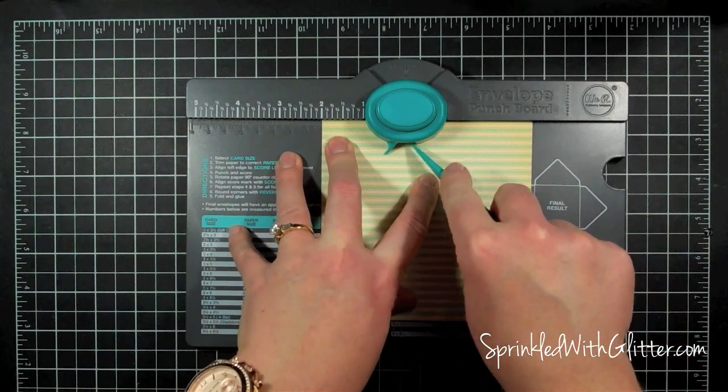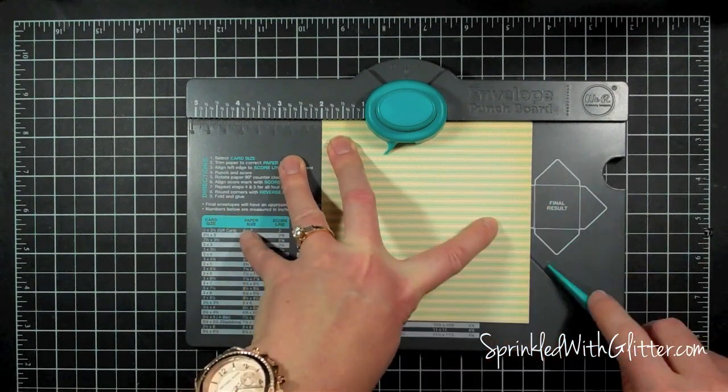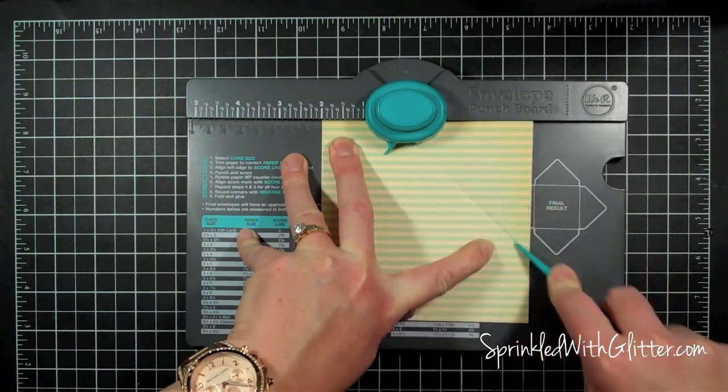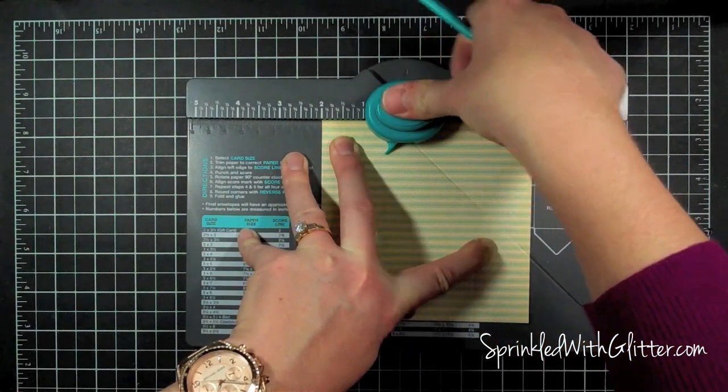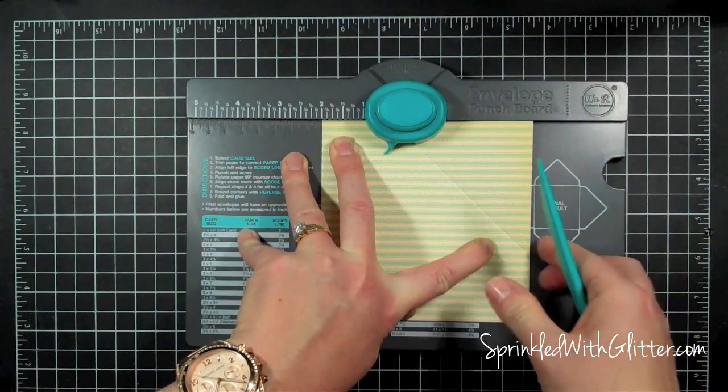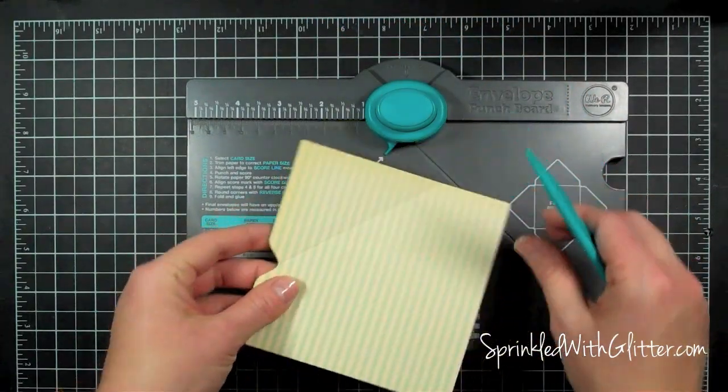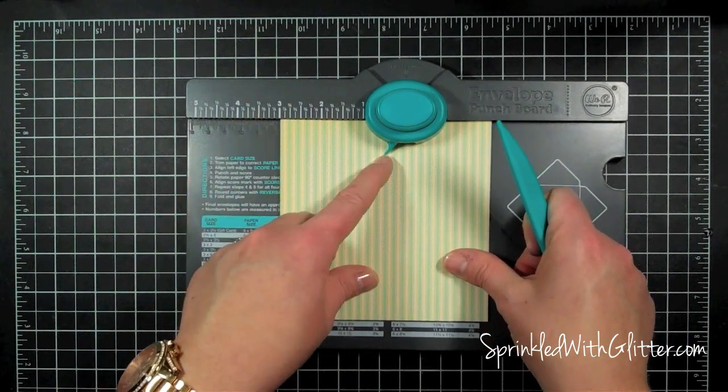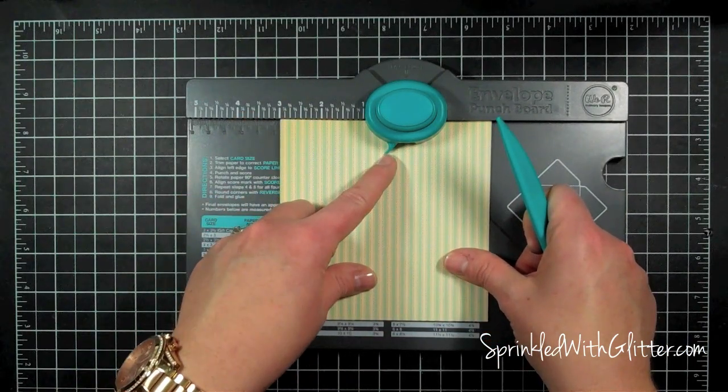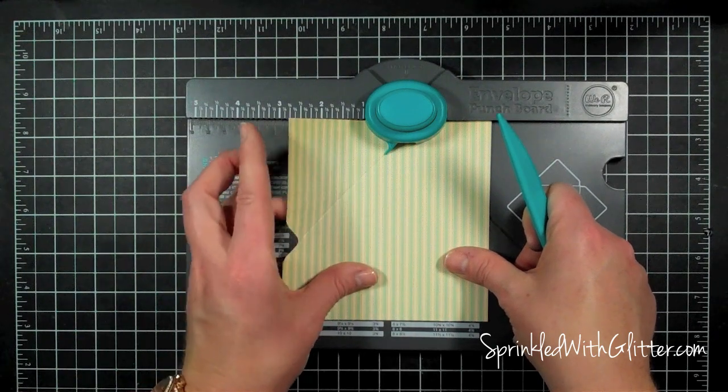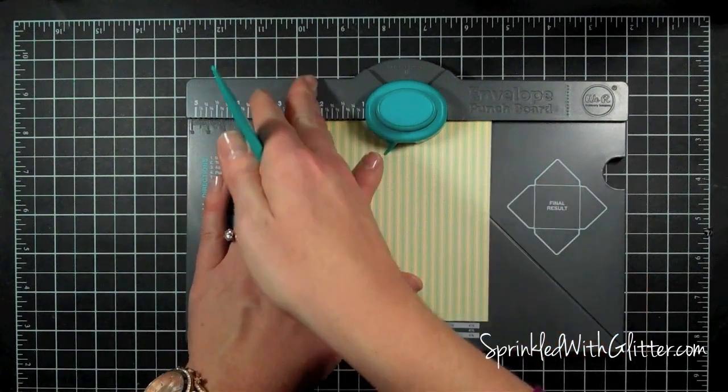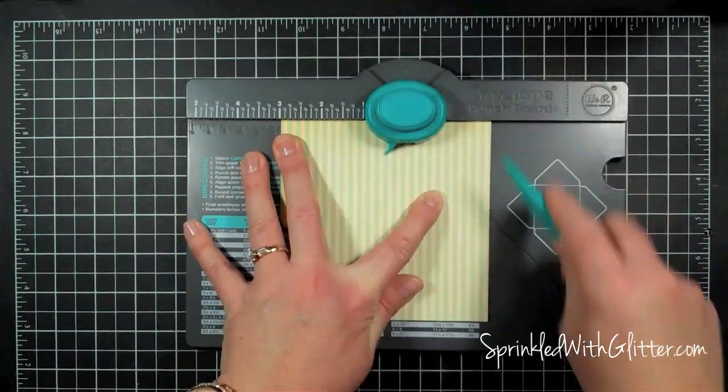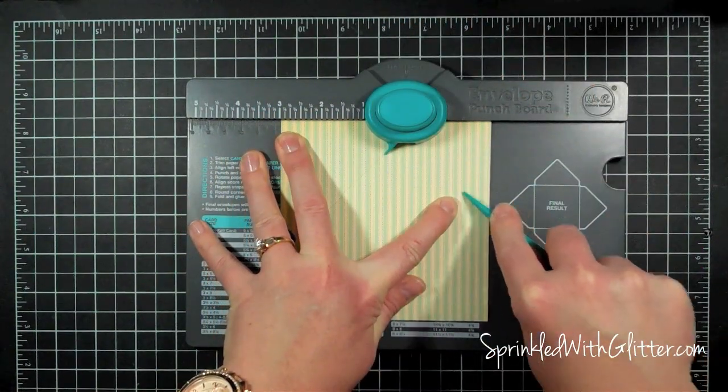And I found that the best way to score this is instead of trying to find the score line up here, to just start from the outside and work in. And then while I have it in that position, I'm going to punch it in that place as well. And then for the second score and all the rest of the scores, I'm going to line up the score line with this marker right here. I don't know if you can see that, but it's lined up with the marker, so I'm not going to pay attention to the measurements anymore. And I'm going to punch and score there as well.